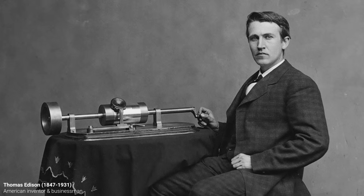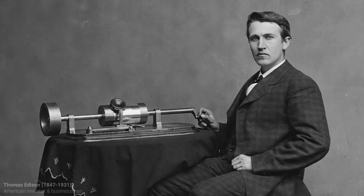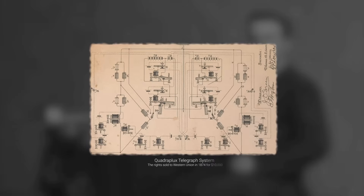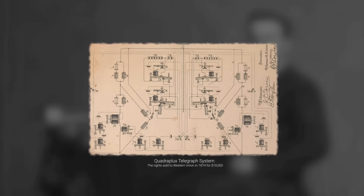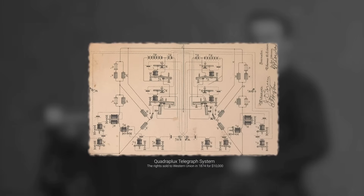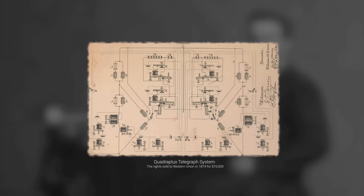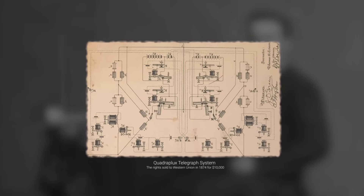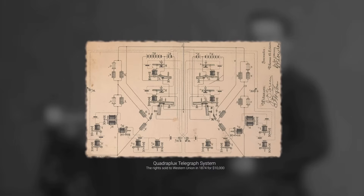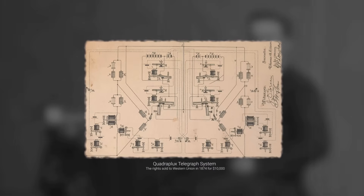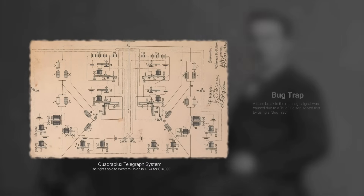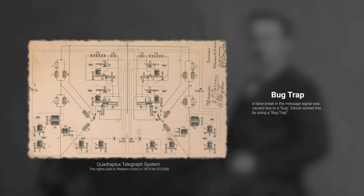In 1873, Thomas Edison was developing a quadruplex telegraph system, which would allow up to four distinct telegrams simultaneously on a single wire. However, he came across an issue that he would later resolve using what's known as a bug trap — a measure taken in order to solve the issue and get rid of the bug.